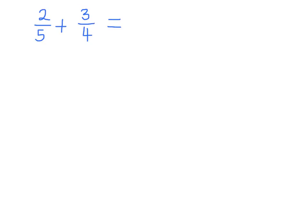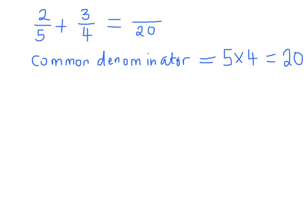Try another example. Here you have 2 fifths and you're adding it to 3 quarters. Again, there's a problem that they don't share a common denominator. So to start, we have to find this common denominator. Just like before, the common denominator is got by multiplying the two denominators. So what I'll get is the common denominator is 5 multiplied by 4. So in this case, it's 20.